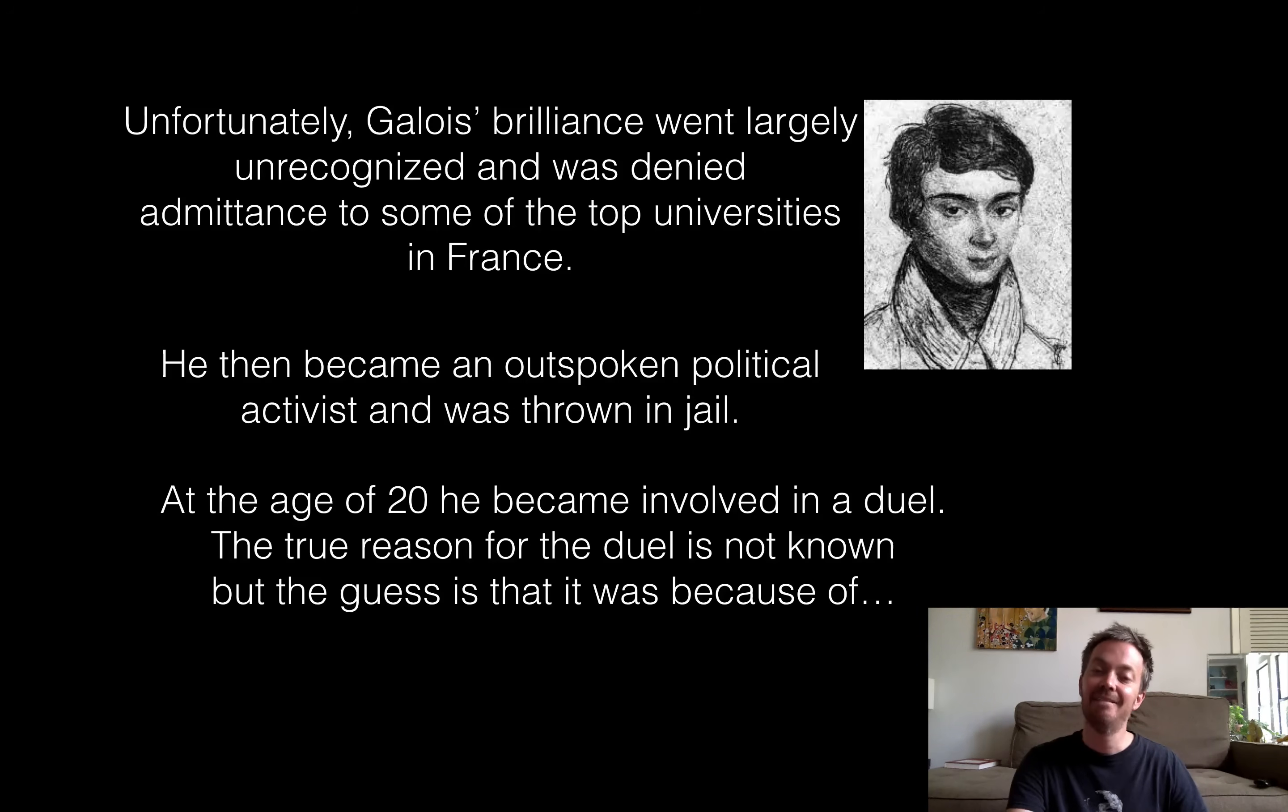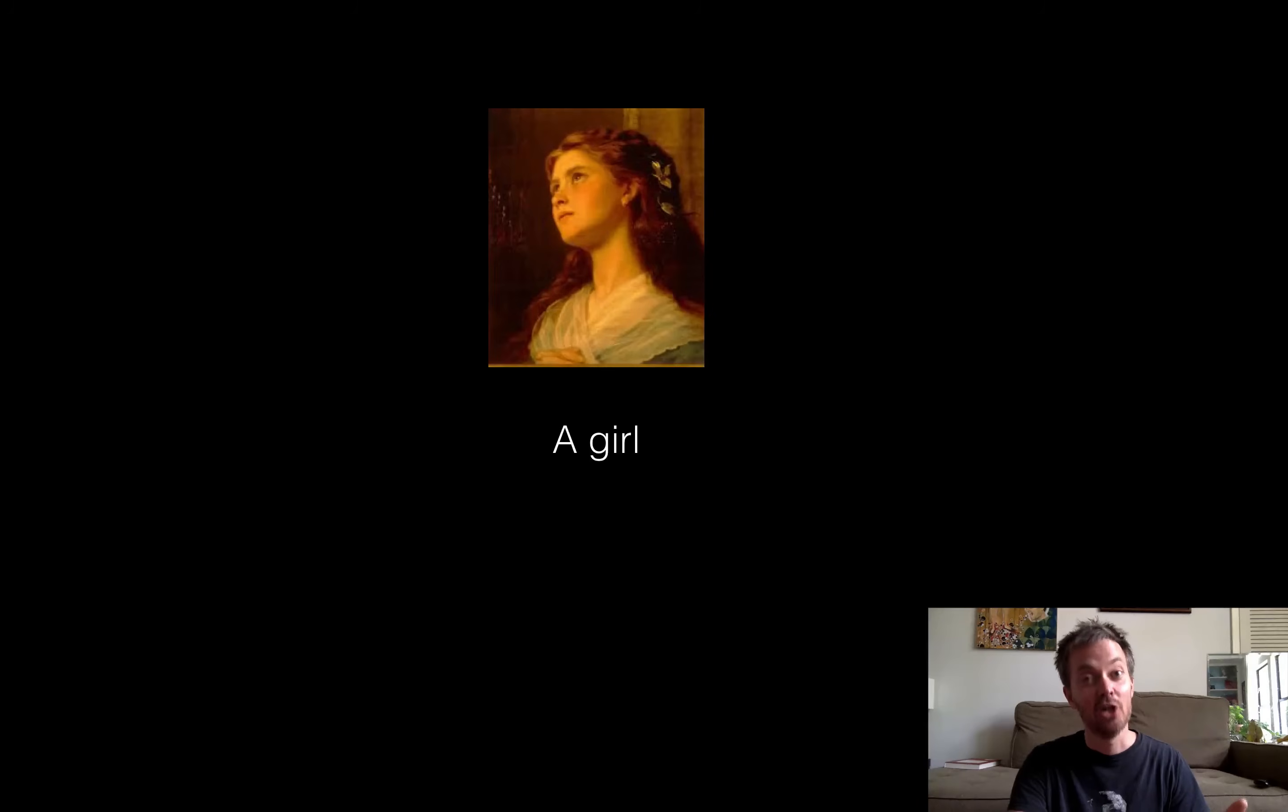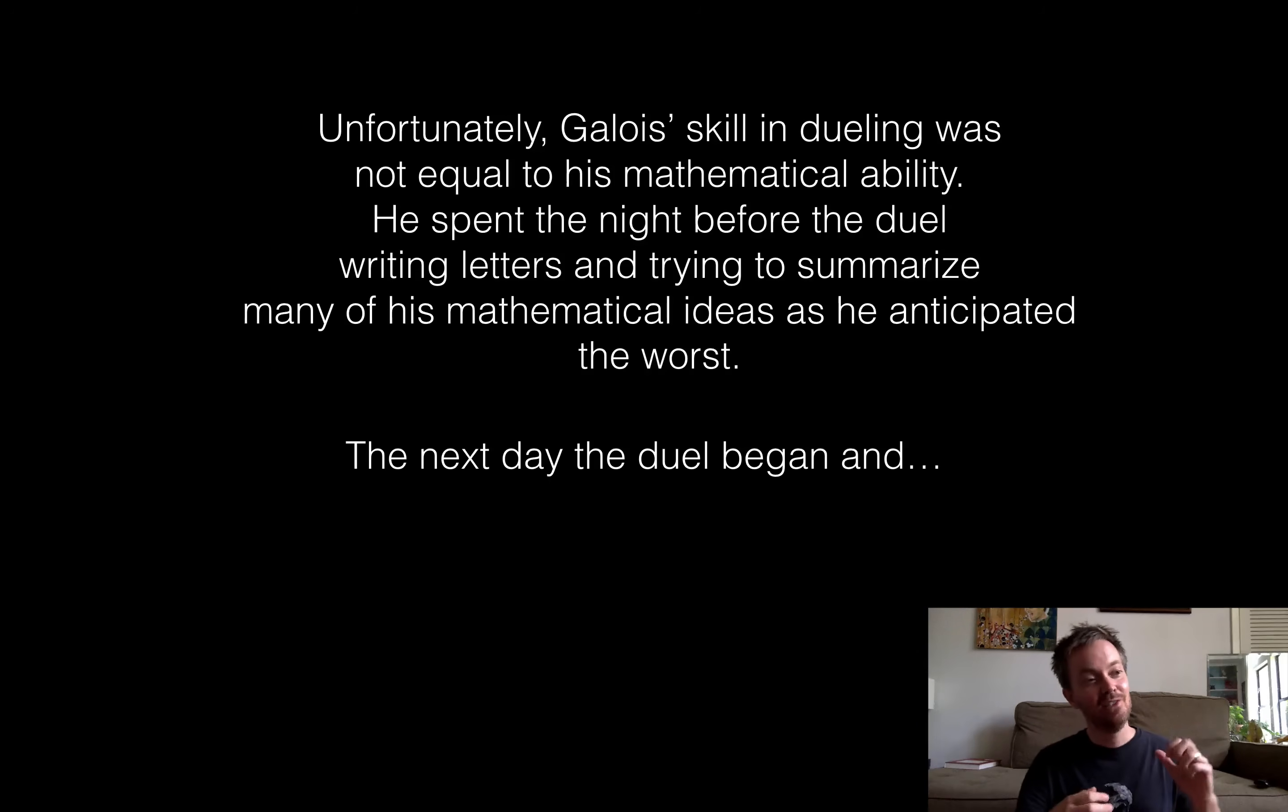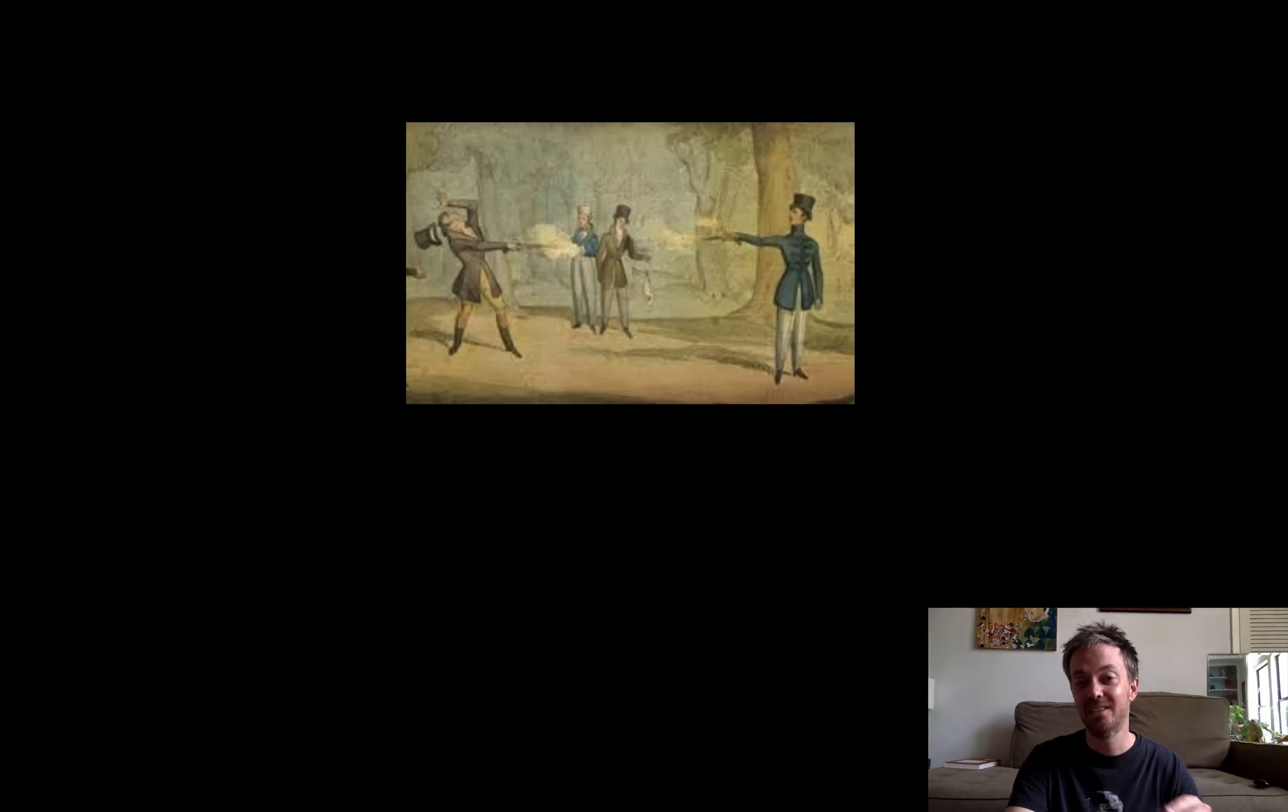So at the age of 20, he got involved in a duel. And the true reason for the duel is not known, but it's suggested the guess is it was because of a girl. So as good a reason as any, I guess, to get in a duel. So Galois knew that his dueling ability probably wasn't up to his mathematical ability. So the night before he got into this duel, he started sort of summarizing a lot of his ideas and his notes and mailing them out and getting them to people. The stories, they kind of romanticized the story. Like he just like wrote all night and poured out and made this great work of mathematical ability. And that became like his main thing. But it was, his work was already out there, but he definitely summarized a lot of important ideas and got those into the hands of other people. So the next day the duel began and Galois died.